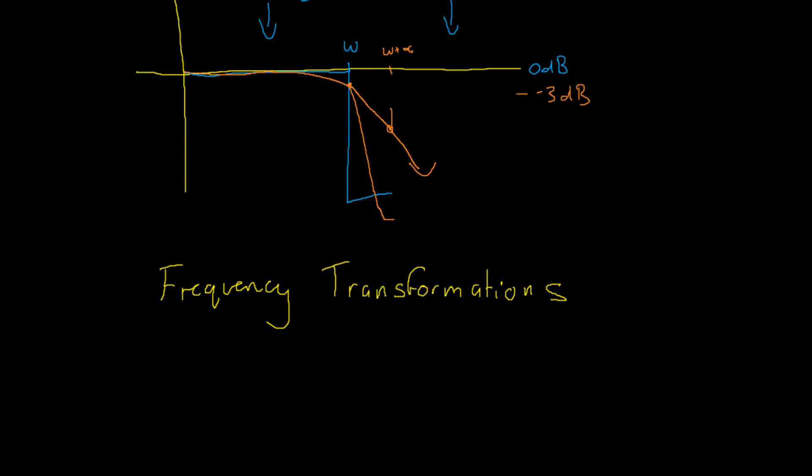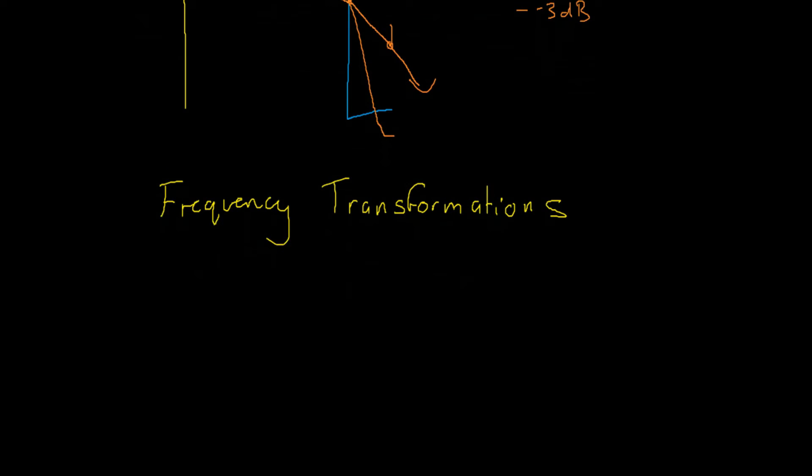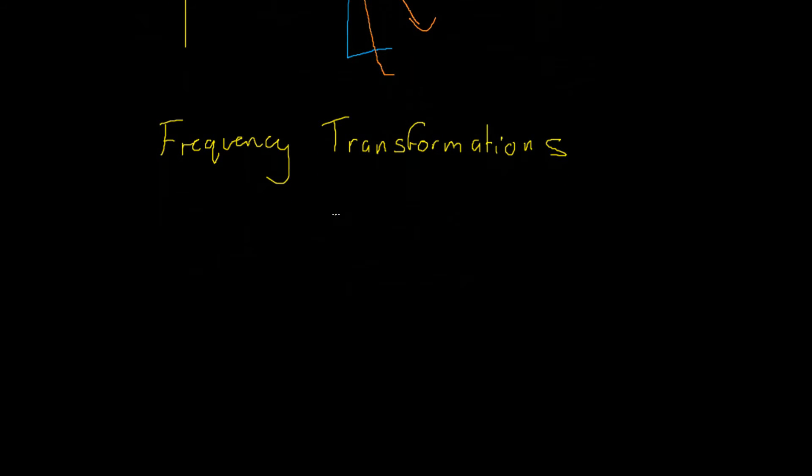Well in the example above we talked about low-pass and high-pass filters. A standard first-order Butterworth filter can be given by its transfer function T of s equals 1 over s plus 1.